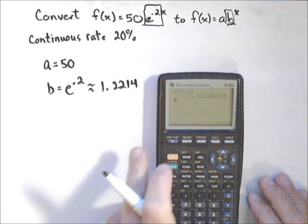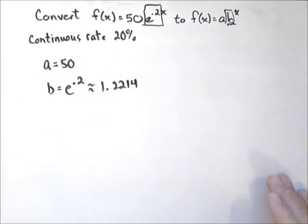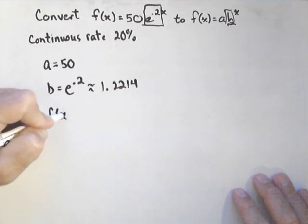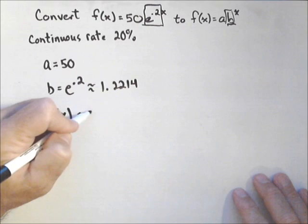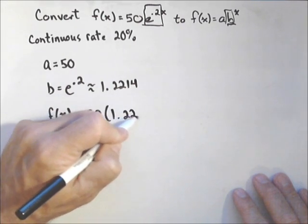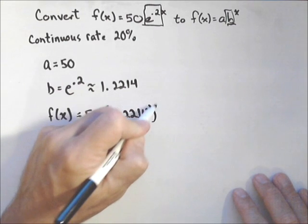So now we can write our function in the other form. F of x equals 50 times 1.2214 to the x.